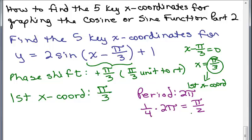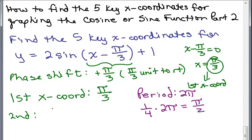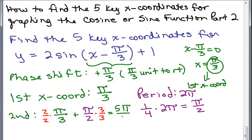We add pi over 2 to get the rest of our coordinates. The second X coordinate is the first one — pi over 3 — plus one fourth of the period, which is pi over 2. We need a common denominator here. Multiplying pi over 3 by 2 over 2 gives 2 pi over 6, and pi over 2 by 3 over 3 gives 3 pi over 6. Adding those: 2 pi plus 3 pi gives 5 pi over 6.